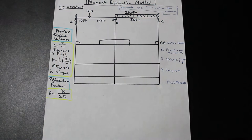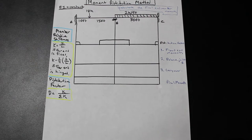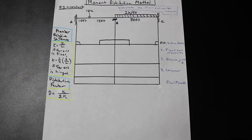Hi guys, Fred here from AF Math and Engineering. This video is on the moment distribution method — a pretty straightforward method covered in third-year civil engineering for indeterminate structures. It does involve filling a table out, but we're just going to do a simple one here. We'll explain what it is and then do a more difficult one later.